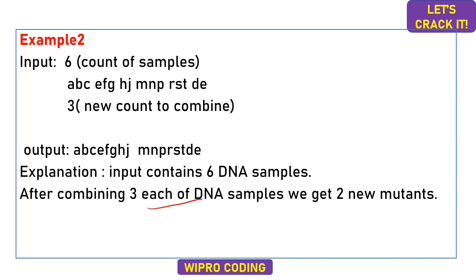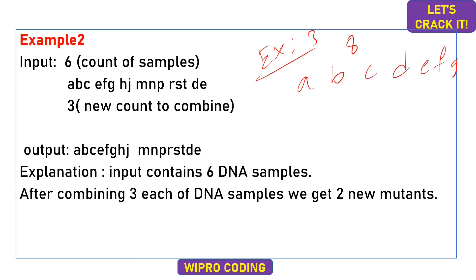For example three, consider samples A, B, C, D, E, F, G, H — eight total samples — and the count to combine is four. Try to figure out the output and comment it in the comment section. Now let's start the live coding of this in Python.